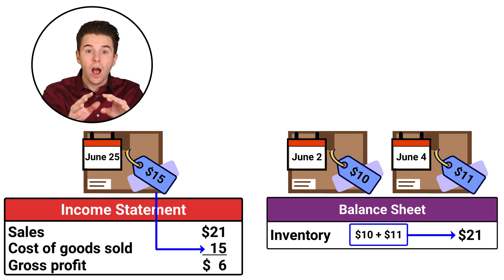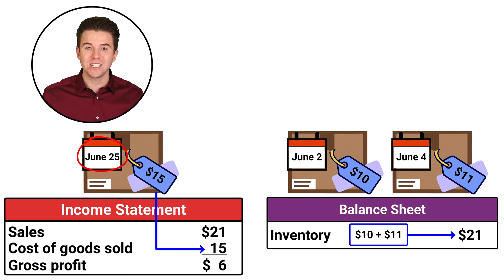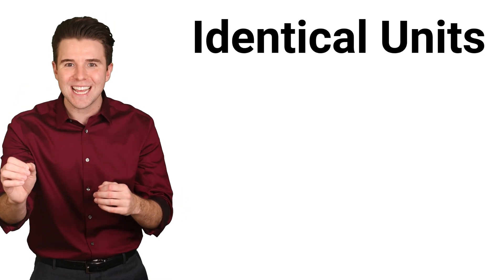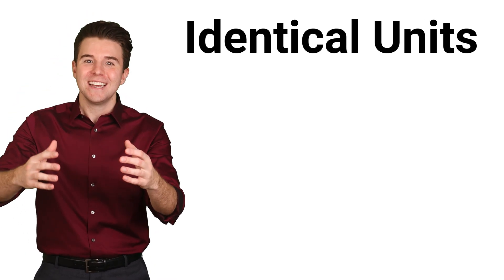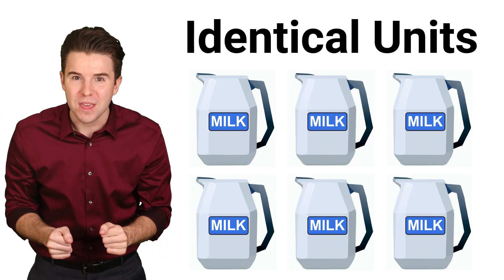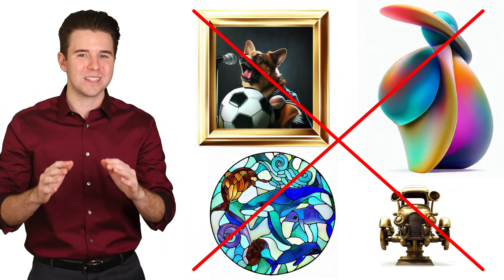As you can see, under LIFO, the last or most recent unit purchased is sent to cost of goods sold on the income statement. The LIFO method can only be used when our inventory consists of identical items. For example, if we are selling identical gallons of milk, we could use the LIFO method. However, if we are selling one-of-a-kind custom artwork, we would not use LIFO.